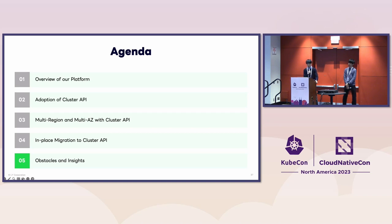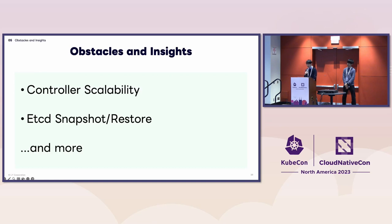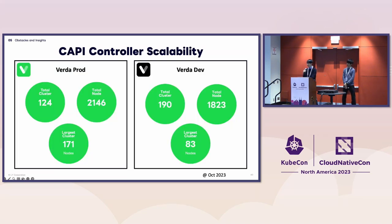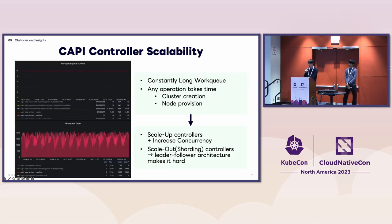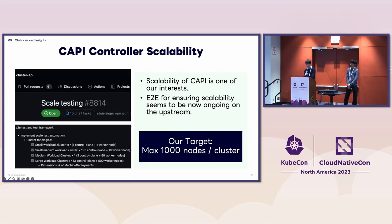We're going to share some obstacles we faced and insights we got from them. Today let us share two topics. The first topic is controller scalability. The number of clusters and nodes is increasing for both environments. For the production environment, over 3,000 nodes are managed by a single management cluster. Since we have a lot of nodes, the machine controller work queue becomes constantly long, and operations like cluster creation or node provisioning take time. One solution would be scaling up controllers, but it wouldn't be easy since controllers have a leader-election architecture. Scalability of Cluster API is one of our interests — our target for now is 1,000 nodes per single cluster, and we'll continue working on scalability.